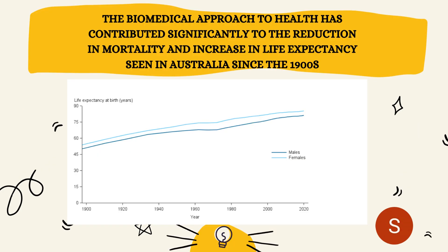In this graph, we can see life expectancy ranging from the 1900s to now for both males and females. We know from previous work that life expectancy has increased since the 1900s. The biomedical model has contributed significantly to this by helping reduce mortality rates, which has helped increase life expectancy. The biomedical model has been around since the 1900s and has become far more advanced in terms of medical technology, which has really helped with that increase in life expectancy.